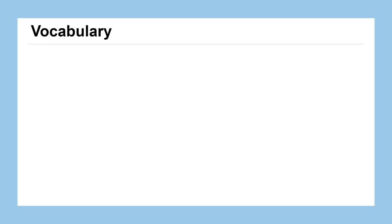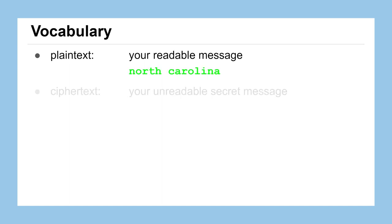Some vocab that we might want to familiarize ourselves with: the plaintext is our original message or data that we're trying to hide. In our last example, that would have been the words North Carolina. The ciphertext is what we're trying to create, this is our unreadable secret message or encrypted data. In the example, it was those letters Q, R, U, and so on.